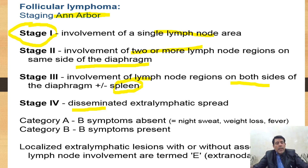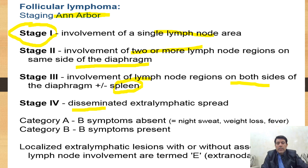Stage four is disseminated disease. There are also symptom criteria: category A means absence of night sweats, weight loss, and fever, while category B means these symptoms — night sweats, fever, and weight loss — are present.